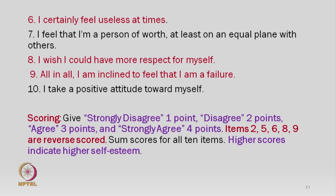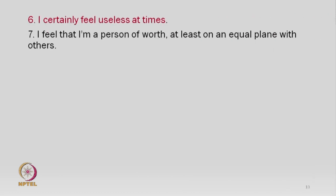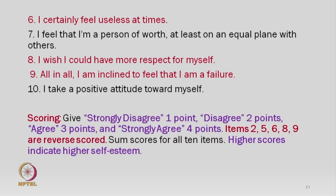Continuing the Rosenberg scale: (6) I certainly feel useless at times. (7) I feel that I am a person of worth at least on an equal plane with others. (8) I wish I could have more respect for myself. (9) All in all, I am inclined to feel that I am a failure. (10) I take a positive attitude toward myself. For scoring: negative items (2, 5, 6, 8, 9) require reverse scoring — strongly disagree = 4, disagree = 3, agree = 2, strongly agree = 1. After reverse scoring, add all scores.